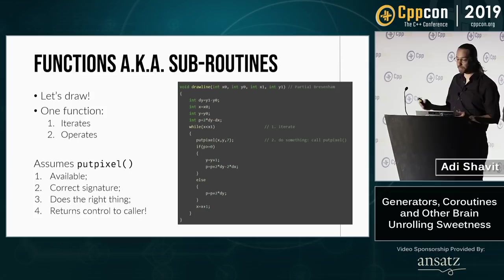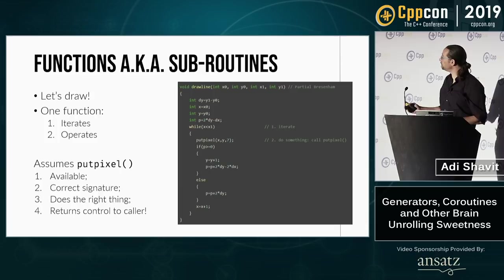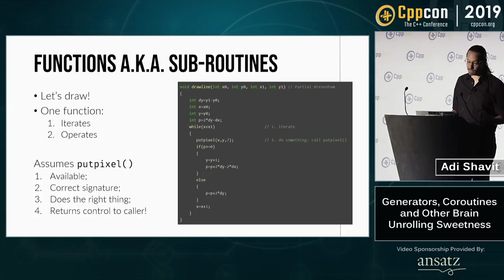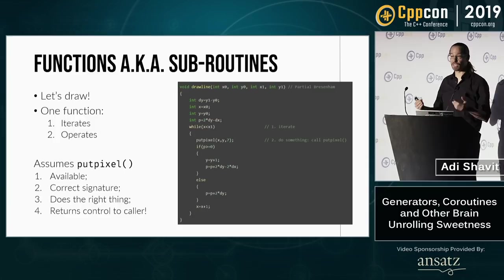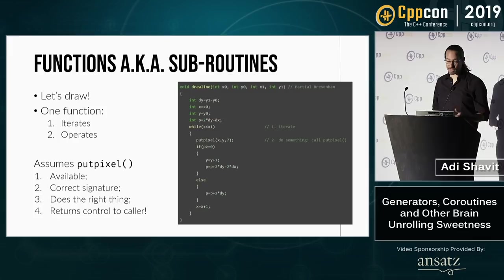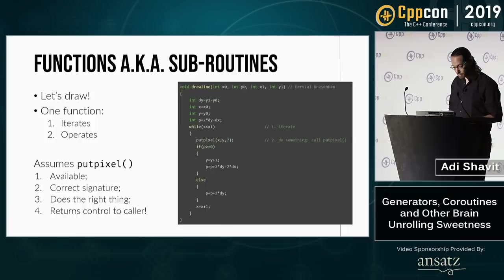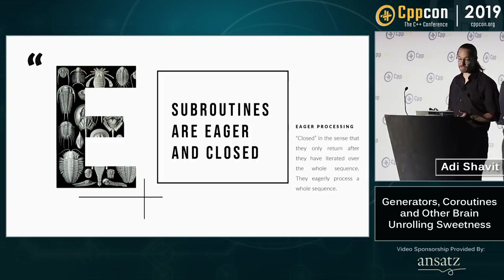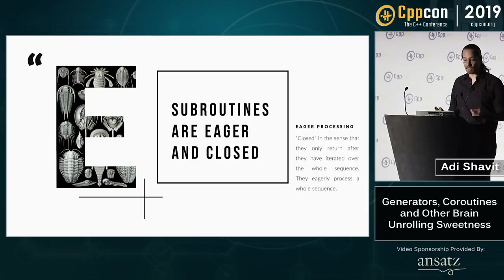draw_line actually assumes several things about the function called put_pixel: it assumes it's available to compile and link with, it assumes it has the correct signature, it assumes it does the correct thing when called mid-computation, and it assumes it will return control flow to draw_line for continuing our computation. So we can see a general pattern: subroutines have two properties — they're eager, eagerly processing the whole sequence before finishing, and they're closed, with a predefined operation applied to each element.